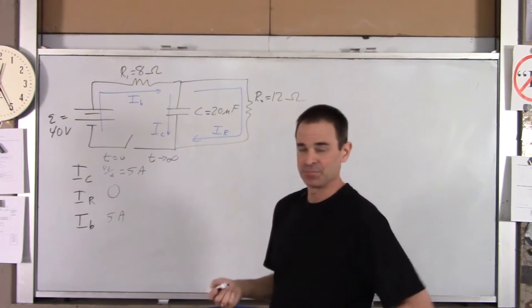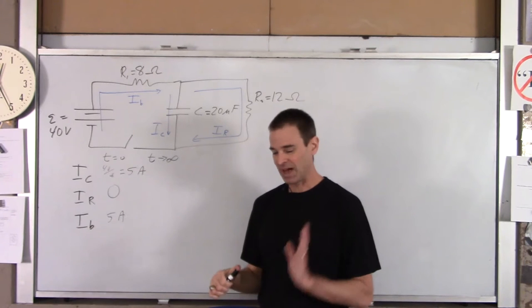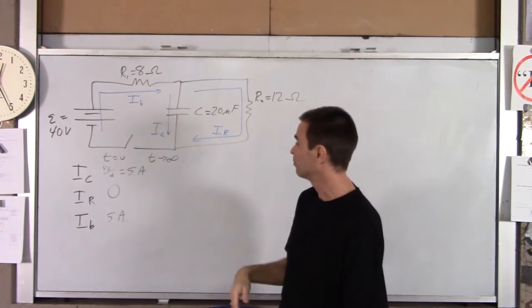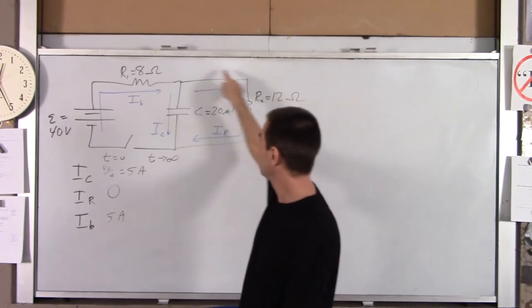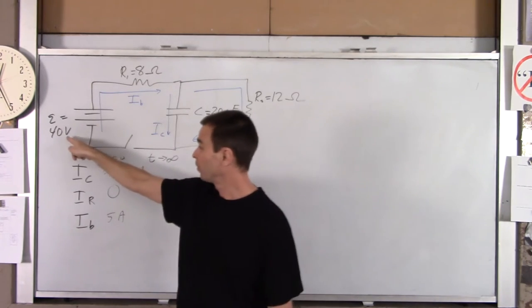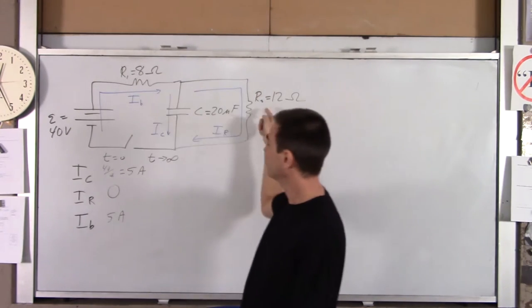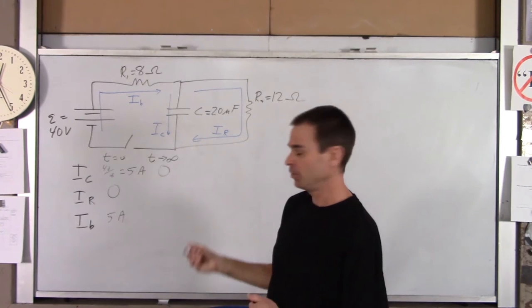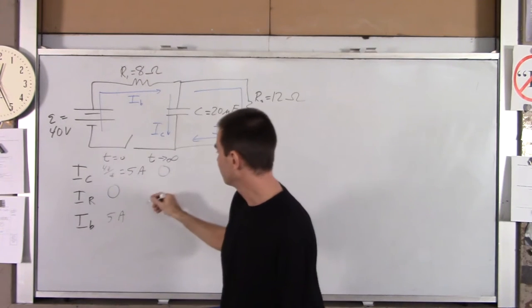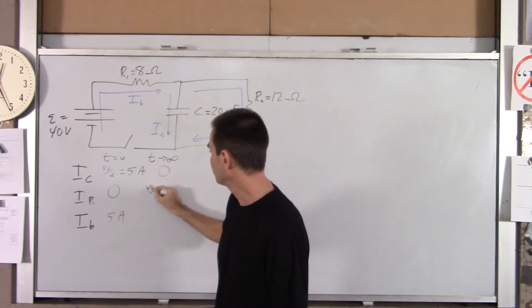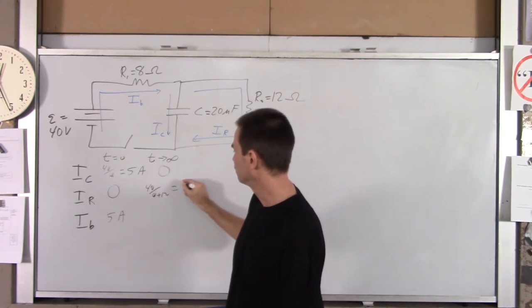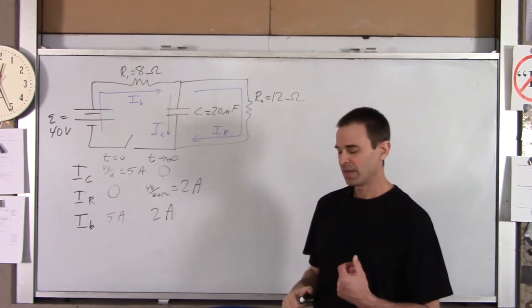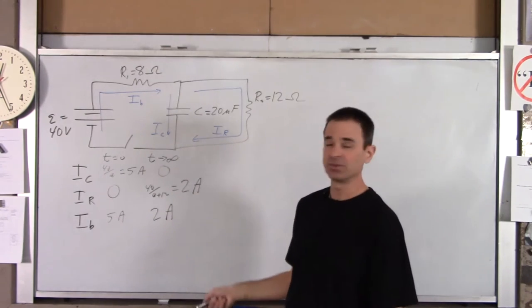After a long long time, once the capacitor is fully charged up, it stops allowing current through it — charges stop depositing on the top plate and stop leaving the bottom plate. So now current flows around the circuit through both resistors. You have 40 volts and a total series resistance of 20 ohms, so the current is 2 amps. After a long time: I_C = 0, and I_R = I_B = 40/(8+12) = 2 amps.